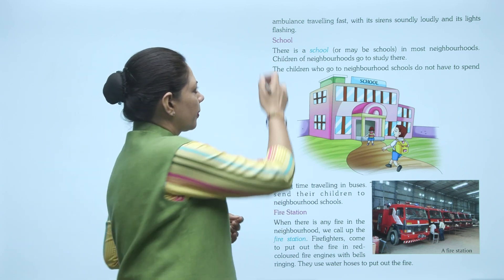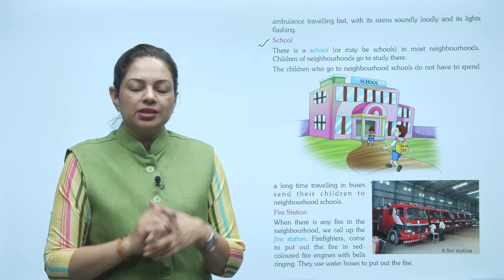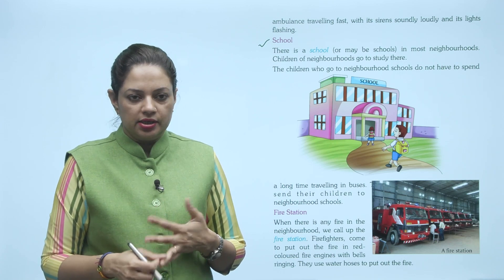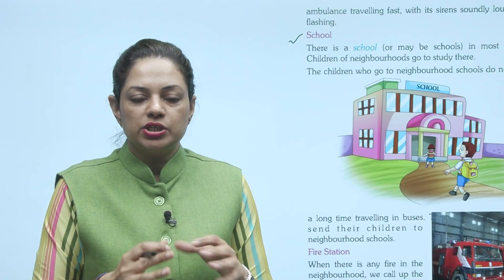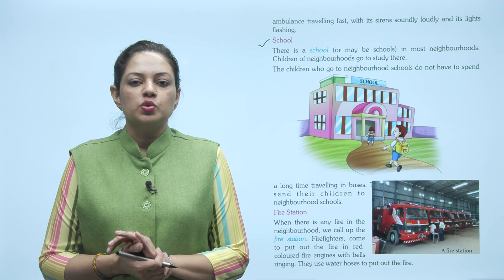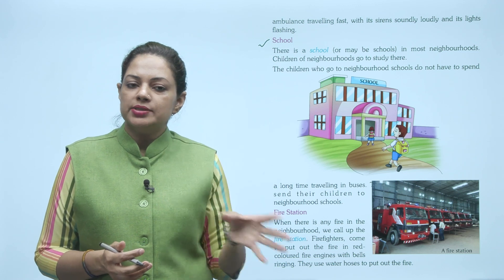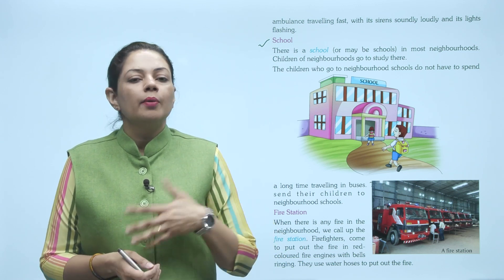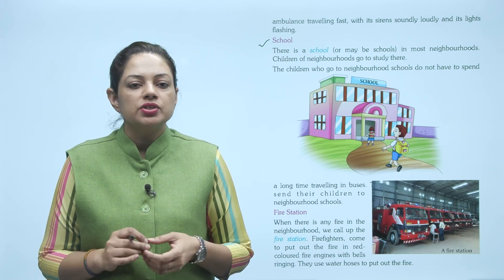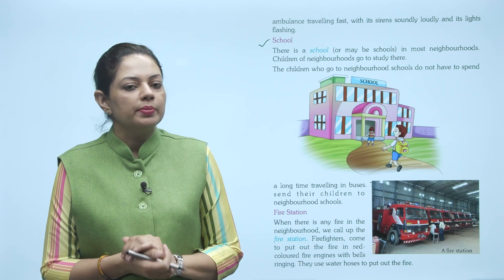Next is school. There is a school, or maybe schools, in most neighborhoods. Zyada tar neighborhoods mein school hote hain — aas paas ek bhi ho sakte hain, bahut saare school bhi ho sakte hain. Children of the neighborhood go to study there. The children who go to neighborhood schools do not have to spend a long time traveling in buses — unhe bus ki zaroorat nahi padti. Isliye hamesha apne bacchon ko apne aas paas ke school mein, apne neighborhood ke school mein hi bhejna chahiye.